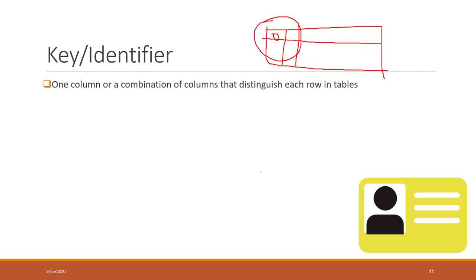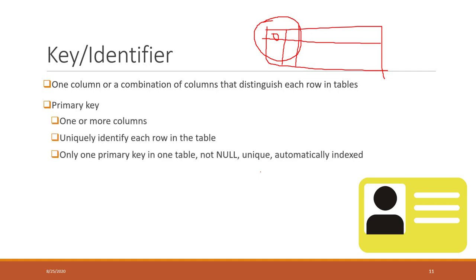There are two types of keys in relational databases. The first one is called the primary key. The primary key can be one column or a combination of multiple columns, and it is used to distinguish each row in that table. The value of the primary key must be unique. If you are using a single column, all the values in that column must be unique, like our GMU IDs. If you are using more than one column, then the combination of all the values of those columns must be unique.